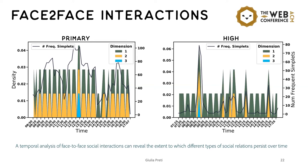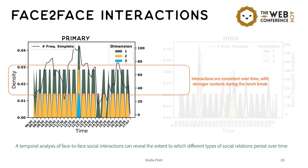In this chart, we can see the evolution of the frequent simplets over time for two datasets, primary and high, which collect the interaction between children in primary and high school during school time. And here we can see the differences between these two schools. For example, in primary, we can see that the interactions are consistent over time, with higher order contacts during lunch. So only in this time slot, we have simplets of dimension three that are frequent.